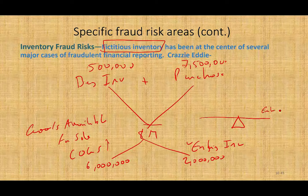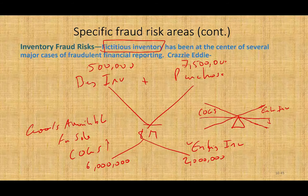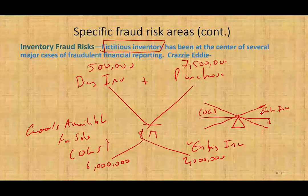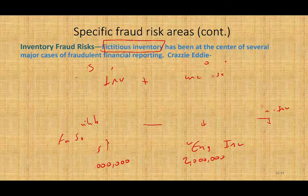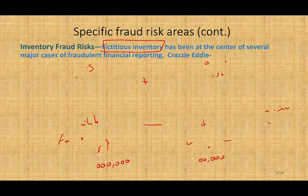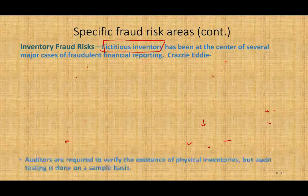So companies, if they want to inflate their profit, will claim that they have more inventory. If they claim more inventory, cost of goods sold goes down — that's the purpose of inflating ending inventory. The classic case for this is Crazy Eddie, and we'll look at their financial statements to show how analytical procedures help you pick up fraud related to ending inventory. Auditors are required to verify the existence of physical inventory, but audit tests on a sample basis.